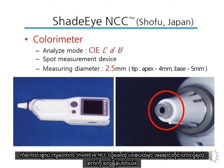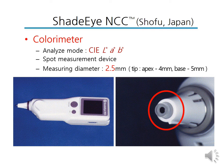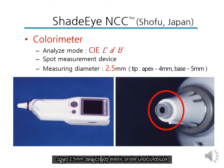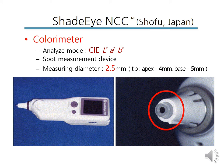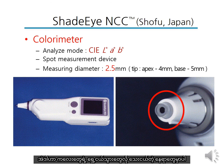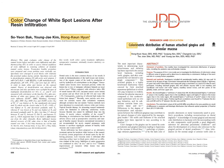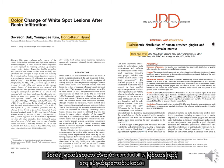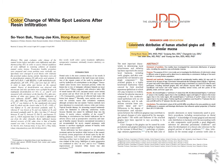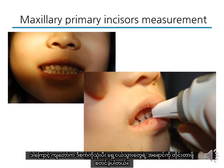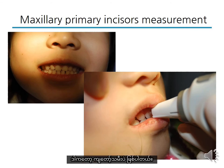Luckily, I found an intraoral contact colorimeter shade INCC having an elastic probe with 2.5 mm in diameter, which can directly measure even the small area of the primary incisors. I have used this device to measure the chromatic values in several studies, and I have been satisfied with the accuracy and reproducibility of the results. So I started to measure the maxillary primary incisors using this device.